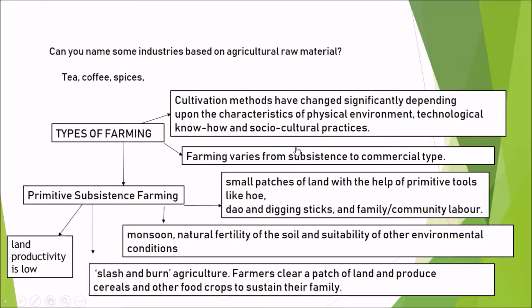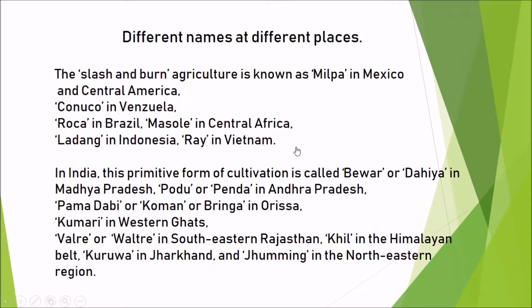In summary, primitive subsistence farming is also known as slash and burn agriculture. It is practiced in monsoon regions with high natural soil fertility. Tools used are hoe, dowel, and digging sticks, and the work is done by family or community labor. The productivity of the land is very low because no external fertilizers are used.